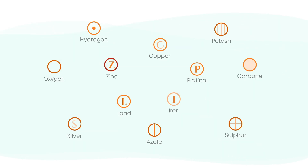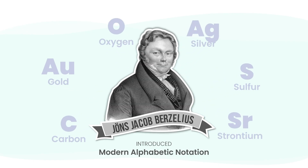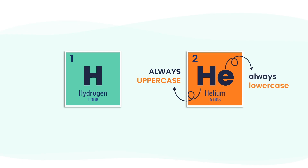The idea of using symbols for elements goes way back. But it was the Swedish chemist Jöns Jakob Berzelius who came up with the system we still use today. In the early 1800s, he began using the first one or two letters of each element's Latin name as its symbol. A simple idea, but it made chemistry easier to write, read, and share no matter where you were in the world. Each element has a name and a unique chemical symbol — either one letter like H for hydrogen, or two letters like He for helium. The first letter is always uppercase, and if there's a second letter, it's always lowercase.